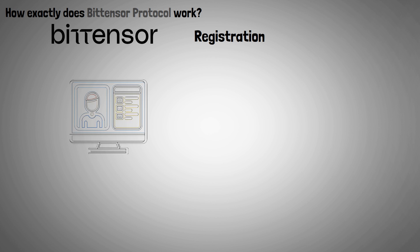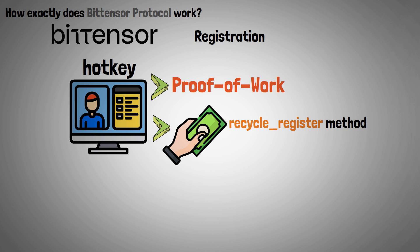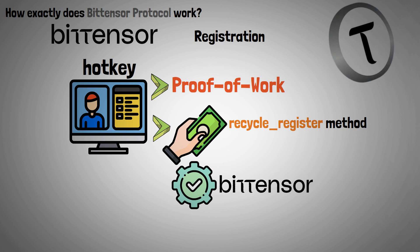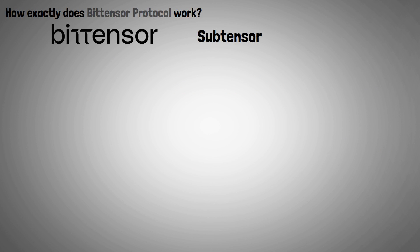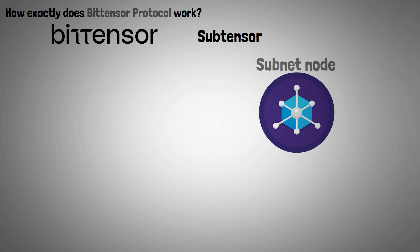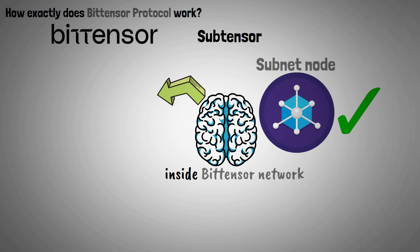Registration: Users must register a hotkey by either completing a proof of work or paying a fee using the recycle-register method in order to engage in the BitTensor network and mine TAU tokens. Once registered, a node joins a subnet — a particular domain or topic within the BitTensor network. Every subnet has a unique collection of nodes that are registered and linked.